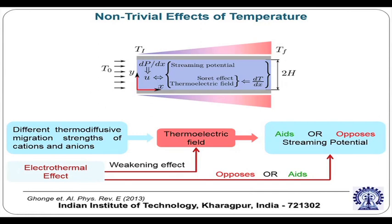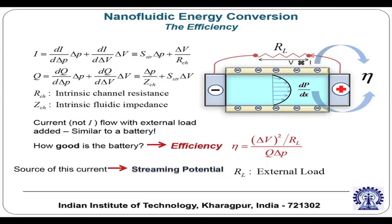The effect of temperature in this system is non-trivial. Cations and anions have different thermo-diffusive migration strengths, generating a thermoelectric field. Additionally, because of the temperature dependence of the electrical properties of the system, there is an electrothermal effect. The thermoelectric field and the electrothermal field may aid or oppose each other, either augmenting or reducing the streaming potential depending on the regimes and the kind of temperature gradient applied.